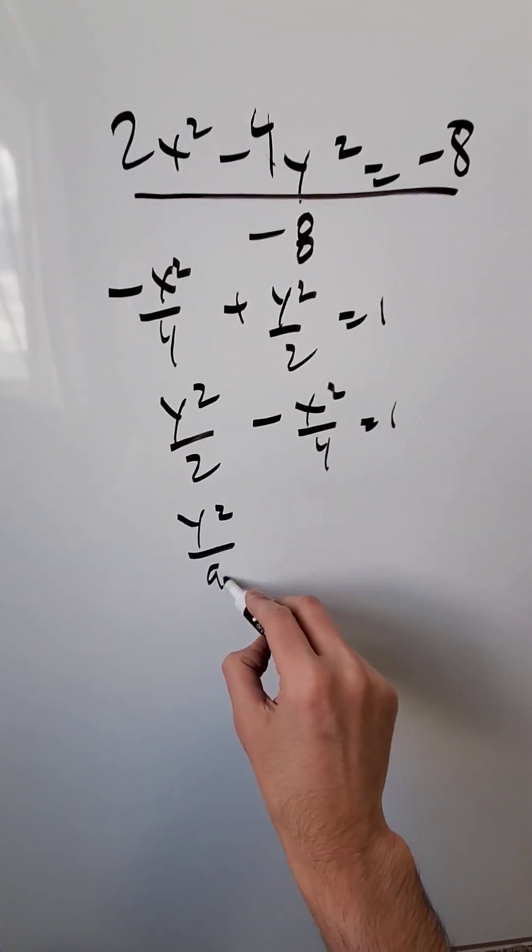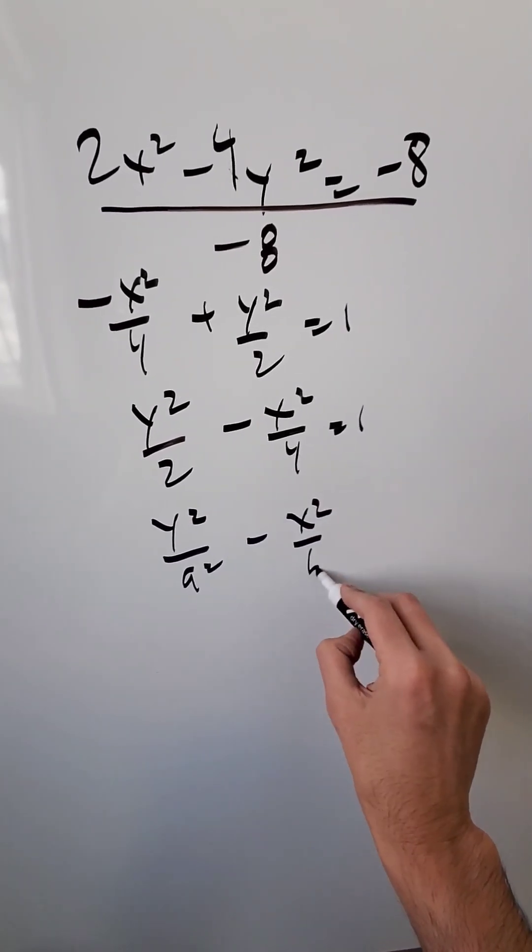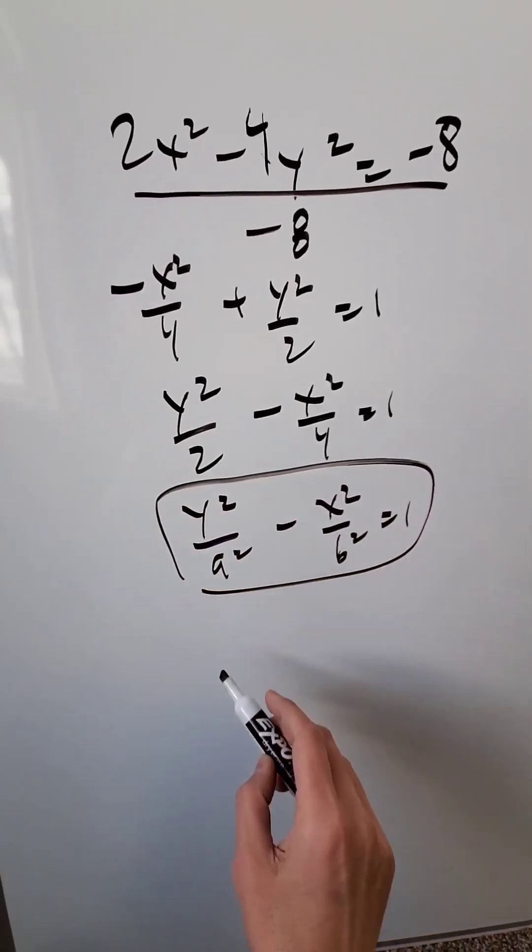You're looking here at this form y²/a² - x²/b² = 1, a vertically oriented hyperbola.